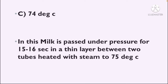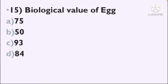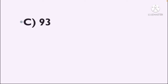Next question: Biological value of egg — Option A: 75, Option B: 50, Option C: 93, Option D: 84. The correct answer is Option C — 93 is the biological value of egg.